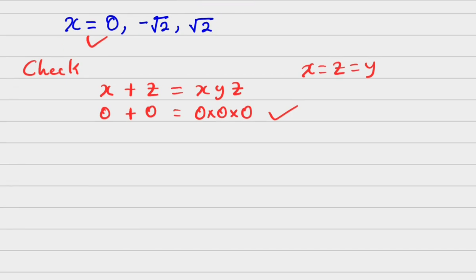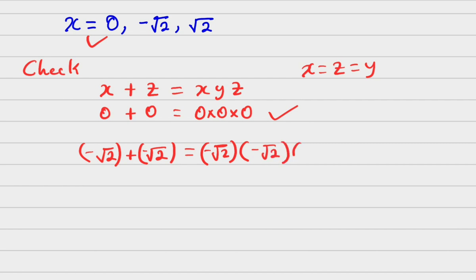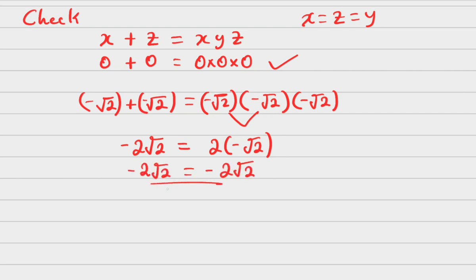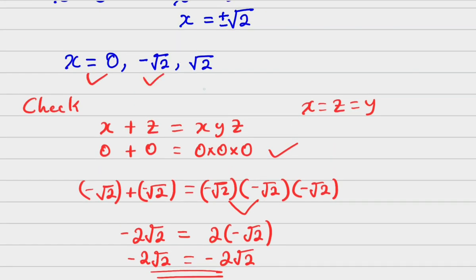Let's go and check root of 2 or negative root of 2. For x equals negative root of 2: negative root of 2 plus another negative root of 2 equals negative root of 2 times negative root of 2 times negative root of 2. This gives negative 2 root of 2, which equals negative root of 2 times 2, which is negative 2 root of 2. So it checks out — this is correct. The last one you can do on your own; it is also correct. So, this is the solution.